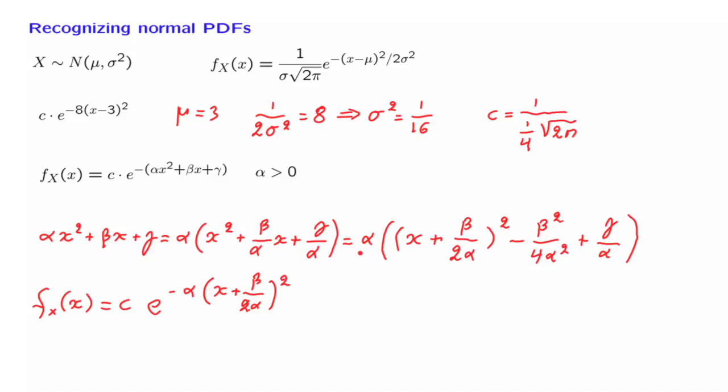And then there's the negative exponential of the rest, which is going to be a term of the form, e to the minus alpha times beta squared over 4 alpha squared plus gamma over alpha.